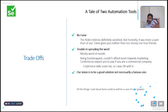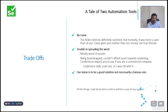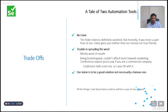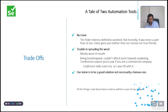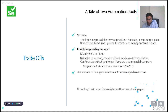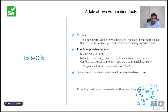The trade-offs of going commercial: no fame. Nobody knows about Sahi, nobody talks about it. While it matters in the sales process, most of our sales has happened through word of mouth. We can't afford marketing in a lot of places because we are bootstrapped. As soon as we went commercial, conferences expected you to pay because you're a commercial company. Our vision is to be a good solution, not necessarily a famous one. All the things I'm saying about fame could very well be a case of sour grapes — I'm aware of that.